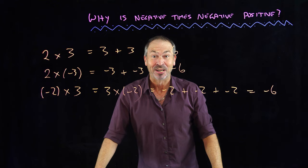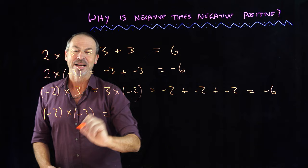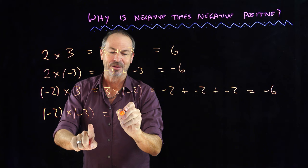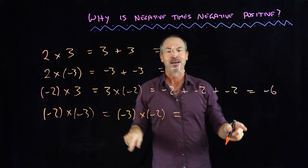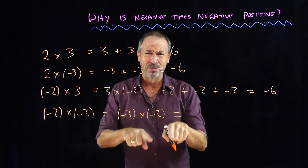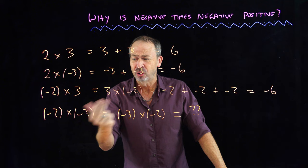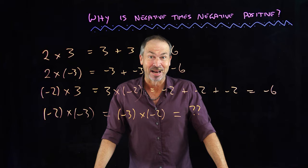Now the juicy question: what's negative two times negative three? 'Negative two groups of negative three' makes no sense, and switching gives negative three times negative two — same issue. I know I've been trained to say the answer is positive six, but I want to actually understand why negative two times negative three should be positive six.